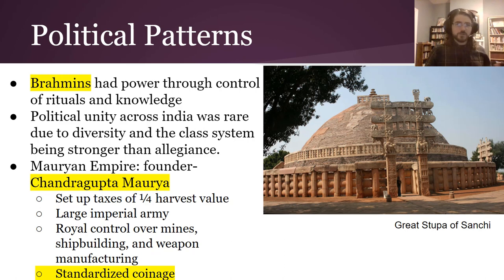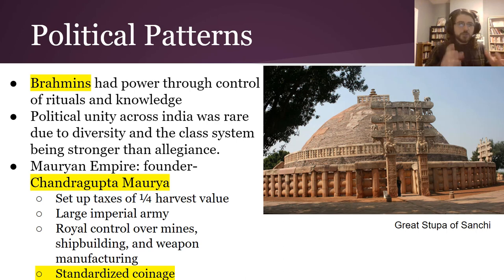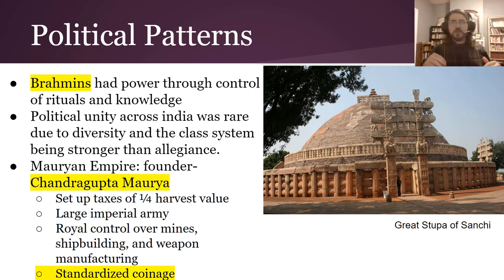Let's talk about some of the political patterns. The Brahmins — the priestly class — had power through control of rituals and religious knowledge. Political unity, where an emperor or king would rule all of India, was very, very rare, in part due to the diversity of this place and also because folks had more allegiance to their class and place within the social structure than to any given king.